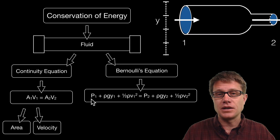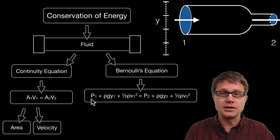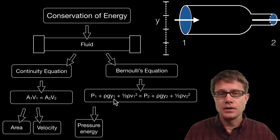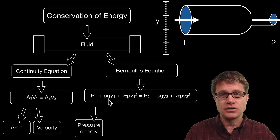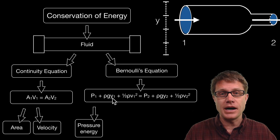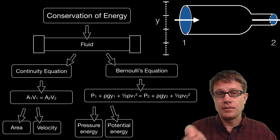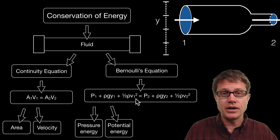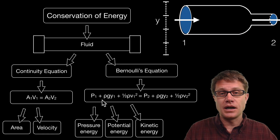P1 stands for the pressure — how much the fluid is pushing in on a point inside the fluid itself; that is the pressure energy. We then have rho times g times y1. If instead of density we wrote mass, and instead of y we wrote h, then mgh is just the potential energy of the fluid. That second term is therefore the potential energy of the fluid. And one-half rho v-squared is the kinetic energy term, since we use density when dealing with a fluid. Those are the three ways we can store energy on one side of the pipe.